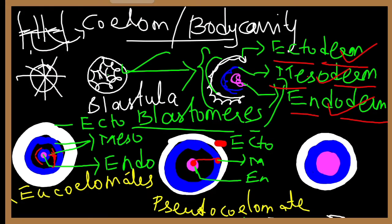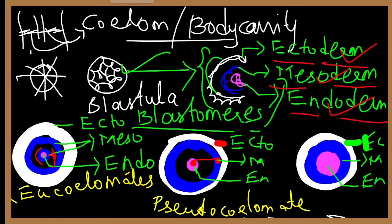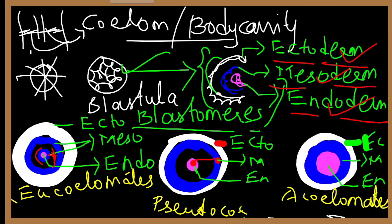In acoelomates, the layers are: ectoderm, then mesoderm, then endoderm — with no space present between them. Organisms with no coelom are called acoelomates. So in summary, there are three types: eucoelomates, pseudocoelomates, and acoelomates. The coelom is the body cavity — the space within the mesoderm.